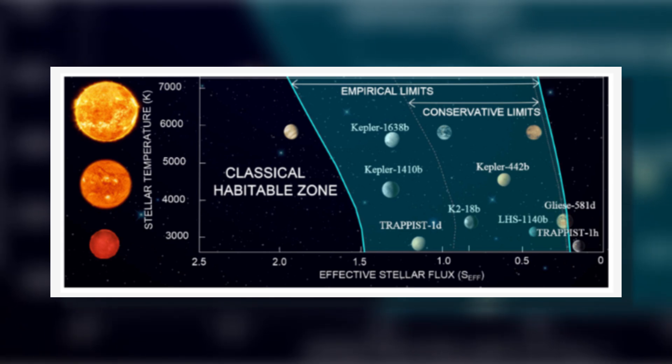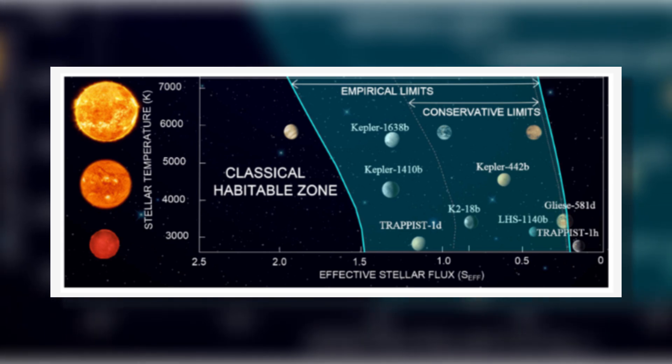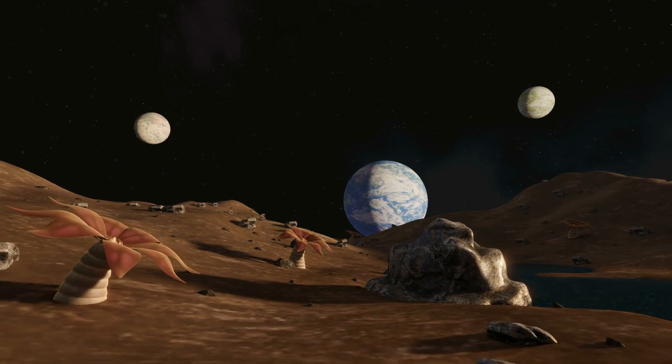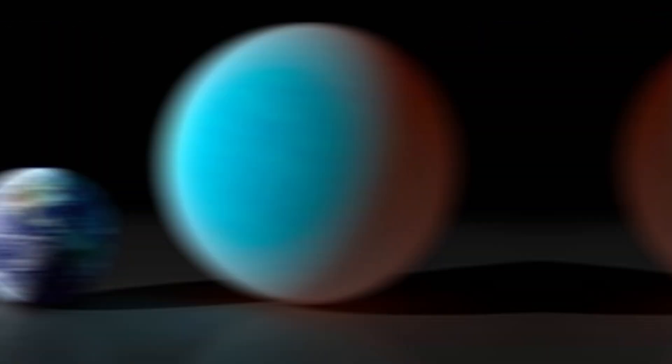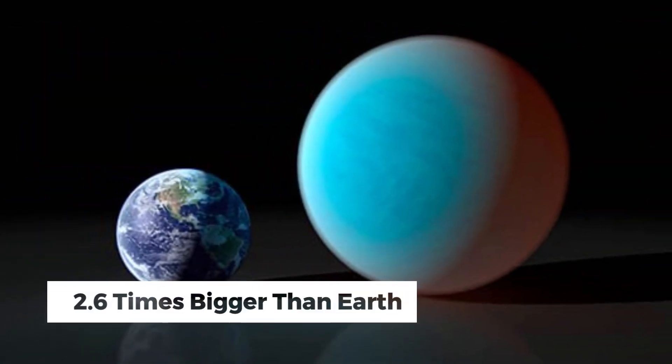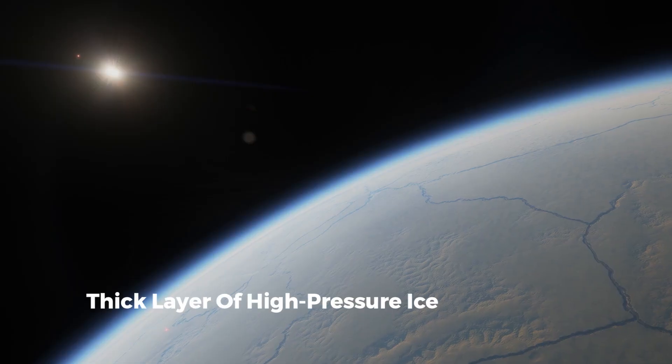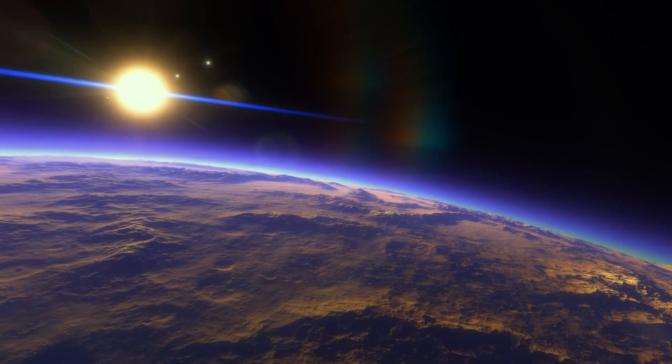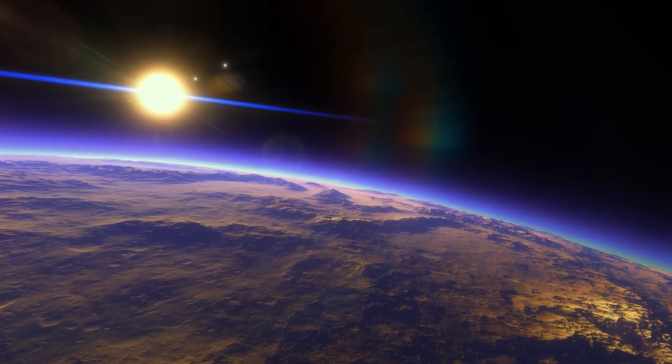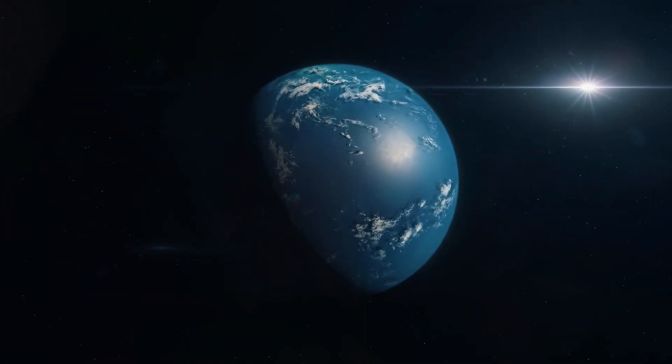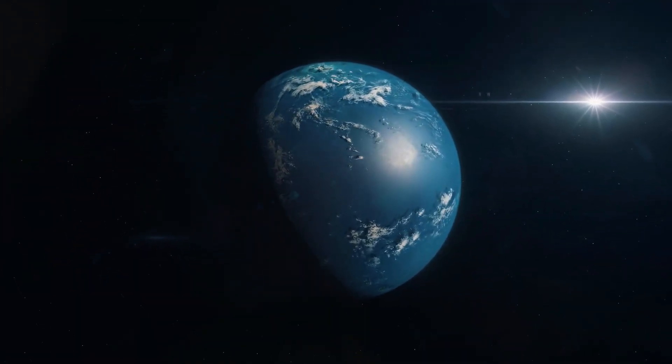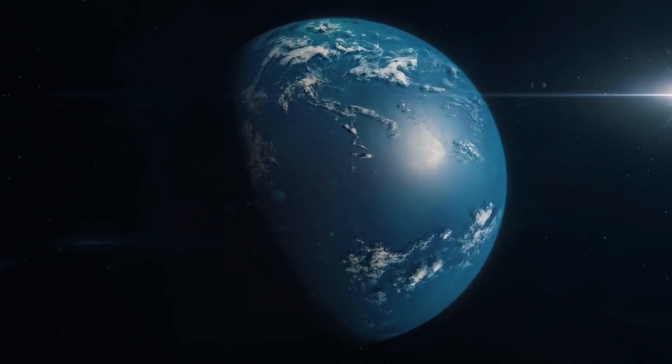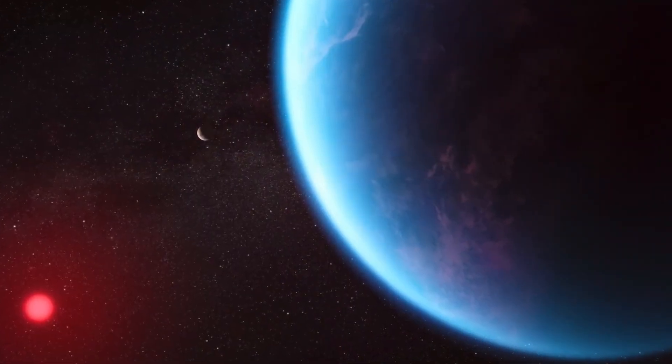While K218b is in the habitable zone and has carbon-rich materials, it doesn't necessarily mean it can support life. The planet is about 2.6 times bigger than Earth and might have a thick layer of high-pressure ice, similar to Neptune. It does have a thinner hydrogen-rich atmosphere and possibly an ocean surface. Even though high CN planets are often thought to have liquid oceans, K218's ocean could be too hard or not liquid enough to hold life.